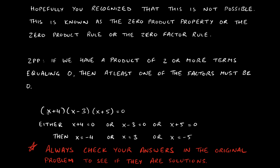So if we take a look at this example, we have (x + 4) times (x − 3) times (x + 5). All three terms on the left-hand side are being multiplied, so we have a product of two or more terms equaling zero. This means that either the first term is zero, the second term is zero, or the third term is zero — or two of them are zero, or all three of them are zero.